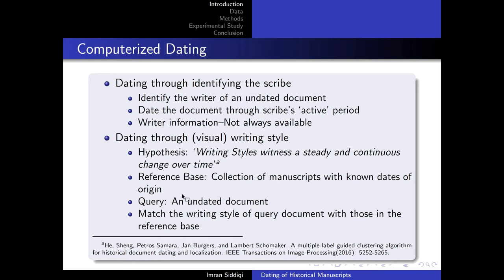For the dating, one approach could be to date the document by identifying the writer. If we know who has written the document, it's easy to correlate with the active period of that particular writer and predict or estimate the date. But the writer information is not always available or not always easy to get. So it makes more sense to use the writing style to actually estimate the date of the document. All of the studies which are exploiting writing style for this purpose are based on the hypothesis that writing style undergoes a steady change over time. The classical framework is that you have a reference base where you have a set of manuscripts with known dates or some estimated duration of the date. Once you have a question or a query document, you can match the writing style with those in the reference base and then you can predict the date for the query document.